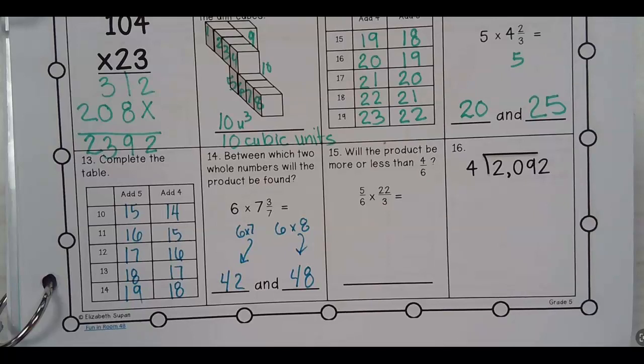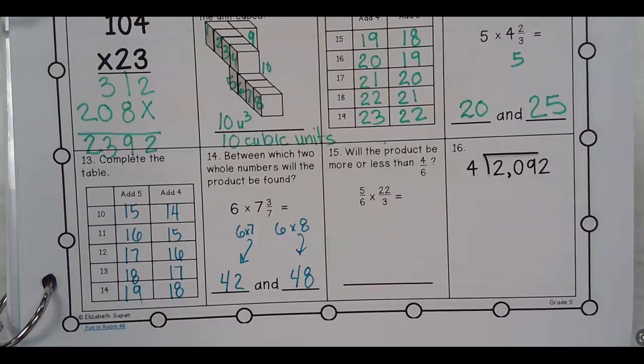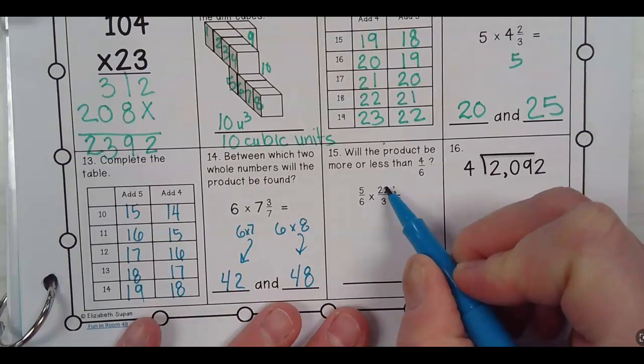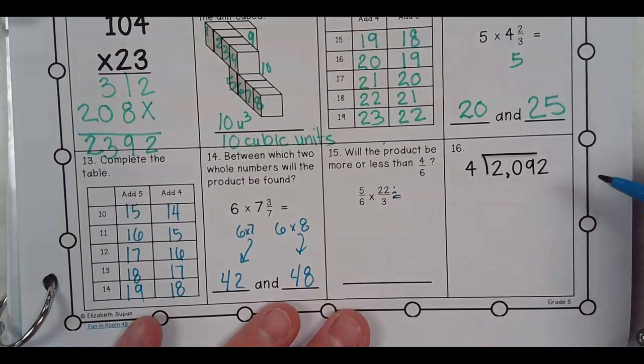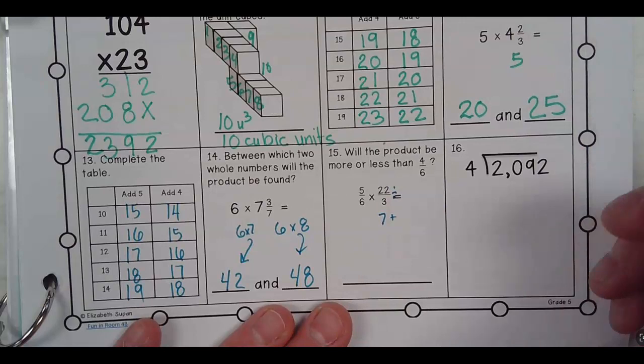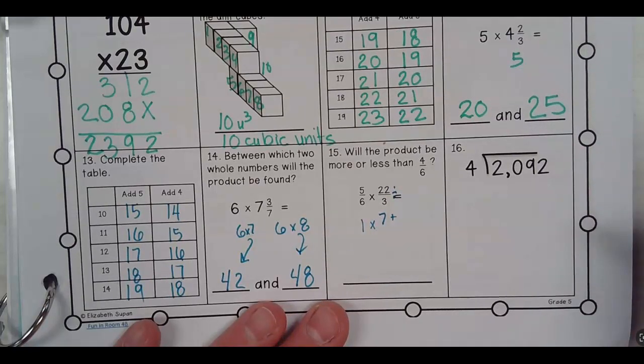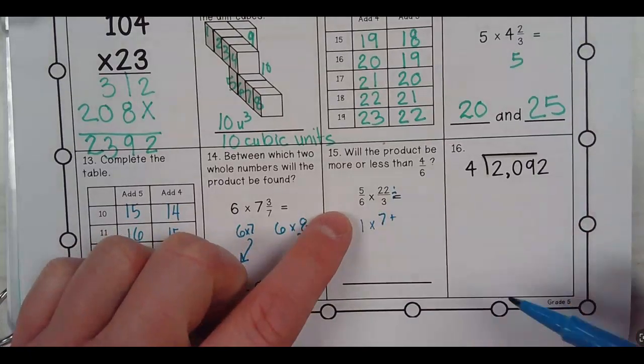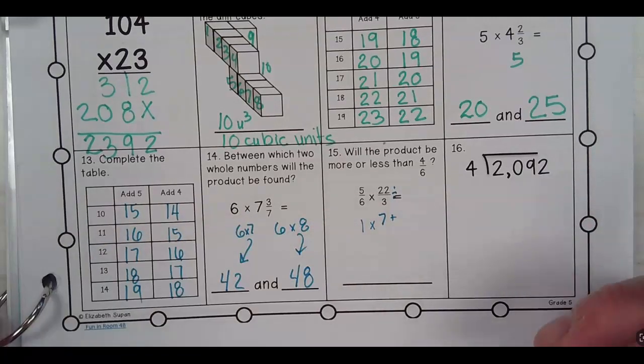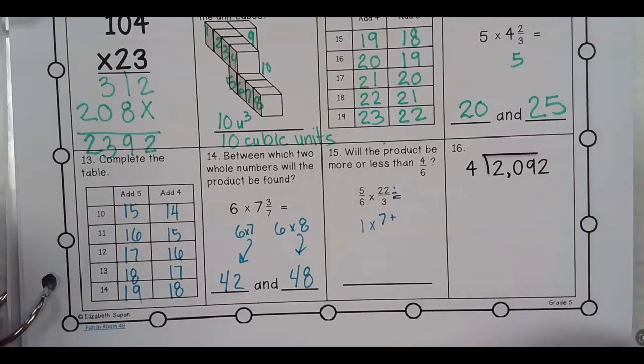Will the product be more or less than 4, 6. Well, if I look at this number and we think of this as divide, what is 22 divided by 3? Well, it's going to be over 7. So, it's going to be 7 plus, right? If I say 1 times 7 plus, because this is about what? 5, 6 is about 1, right? 1 times something that's 7 is going to be around 7. So, is it going to be more or less than 1? It's going to be more than 1.